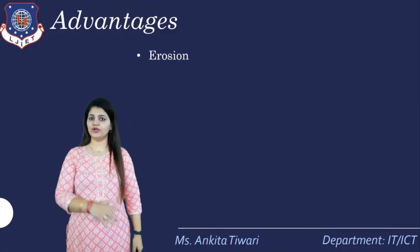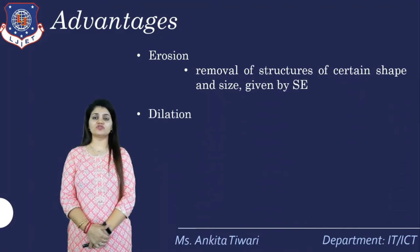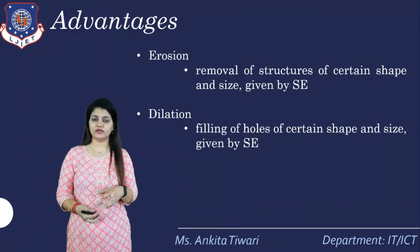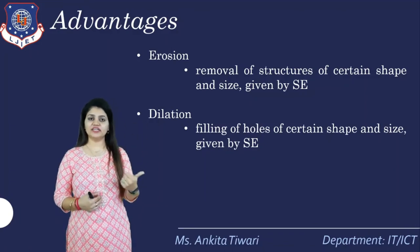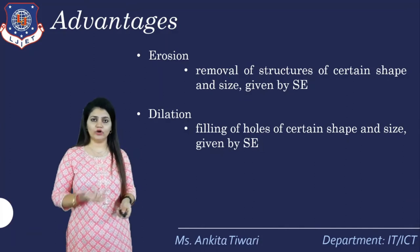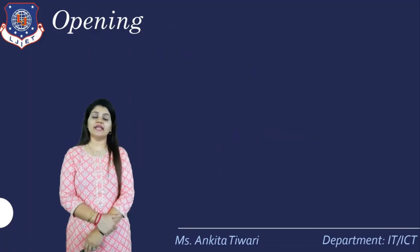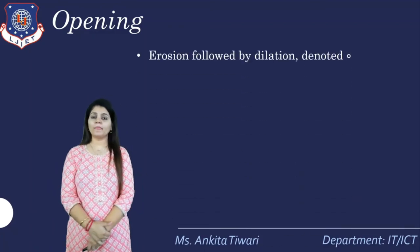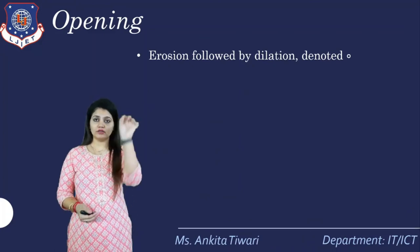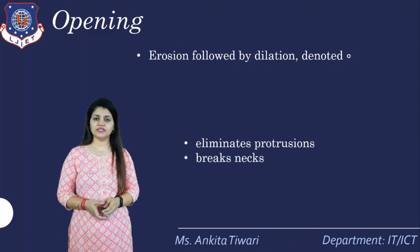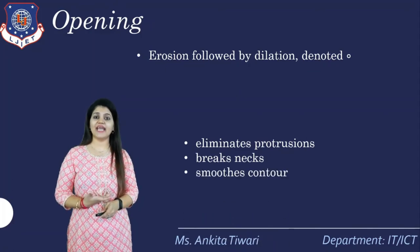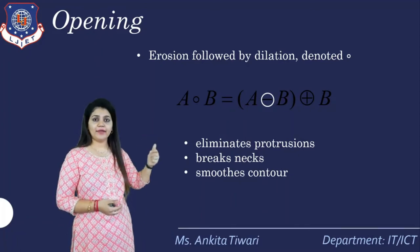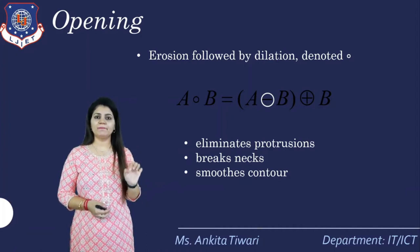The advantages: erosion removes structures of certain shape and size given by the SE, while dilation fills holes left by erosion, filling them by a certain shape and size given by the SE. The combination of erosion and dilation gives us opening and closing. Opening is erosion followed by dilation, denoted symbolically as A ∘ B, which eliminates protrusions and breaks, and smooths the contour.